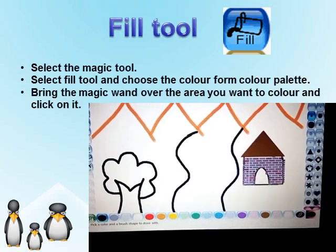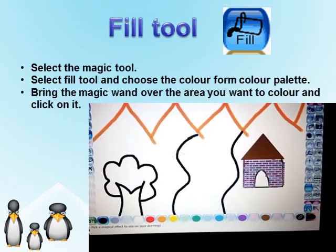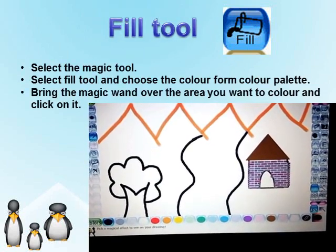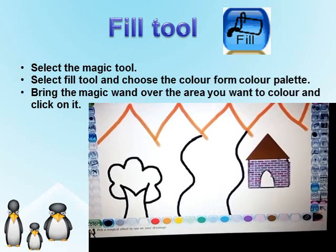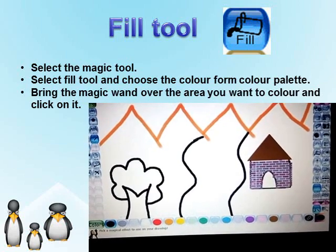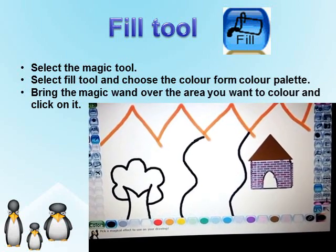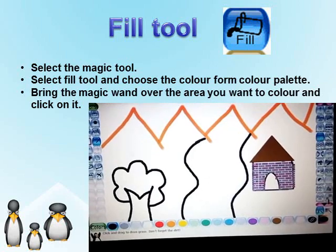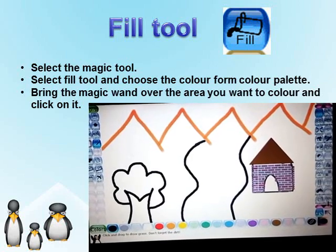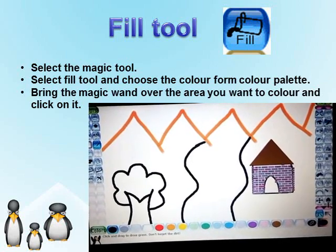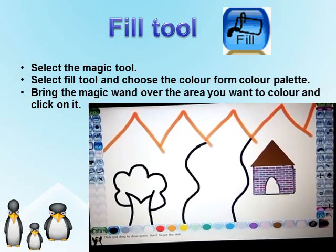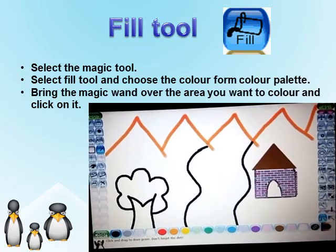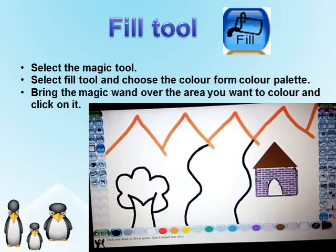Using Fill Tool: It is used to fill color in an object. Select the magic tool, then select the fill tool and choose the color from the color palette. Now bring the magic wand over the area you want to color and click on it. The color will get applied to the picture.